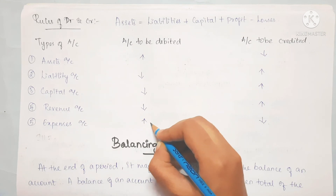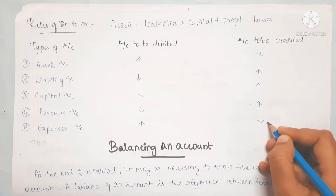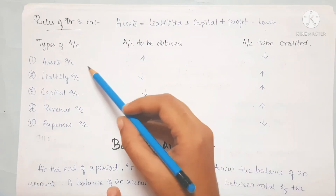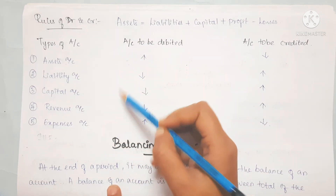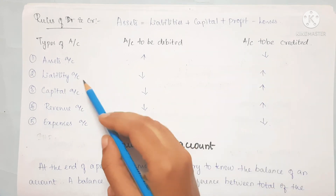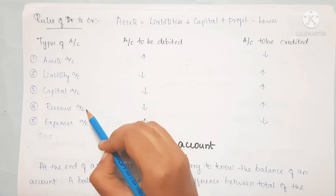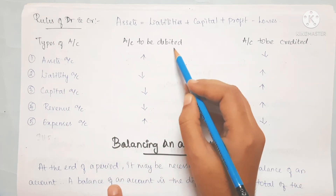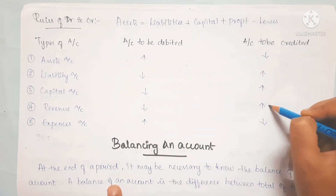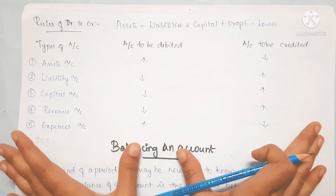To summarize the modern theory rules of debit and credit: For Assets and Expenses - increase means debit, decrease means credit. For Liabilities, Capital, and Revenue - decrease means debit, increase means credit. This is the modern theory of accounts rule.